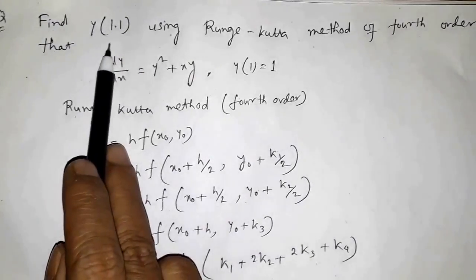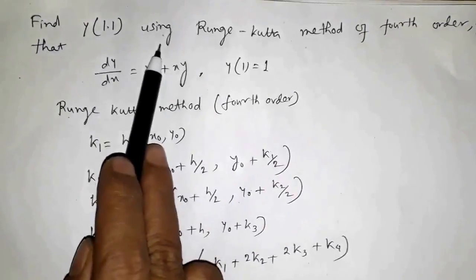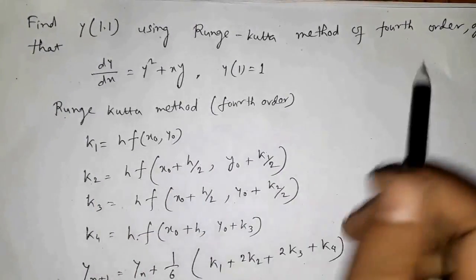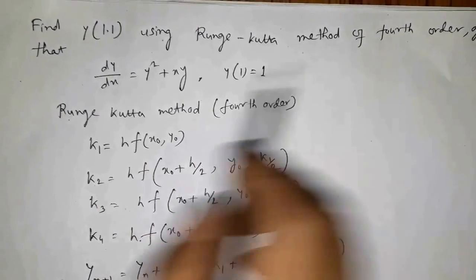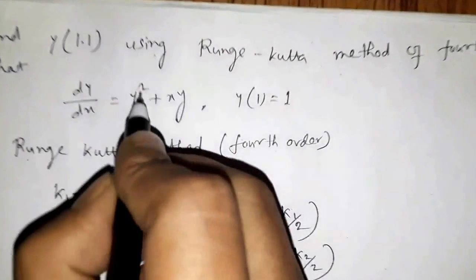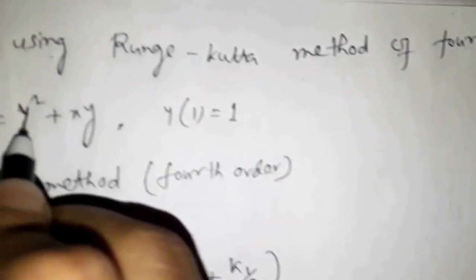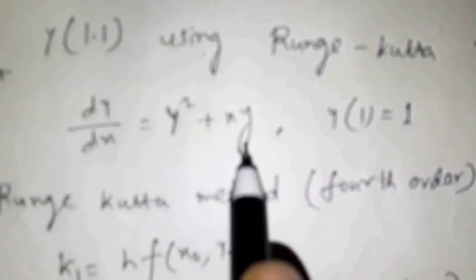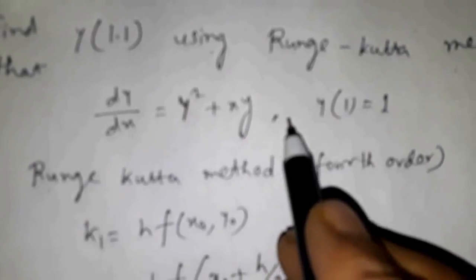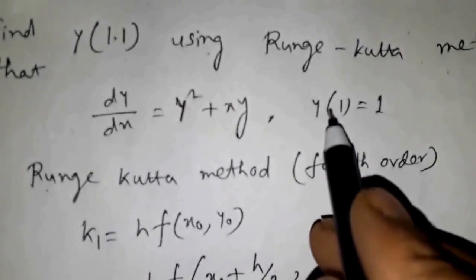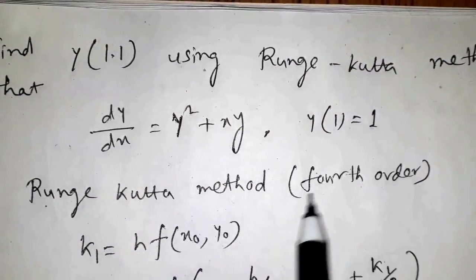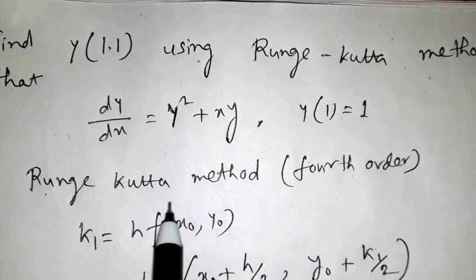Find the value of y(1.1) using the Runge-Kutta method of fourth order, given that dy/dx equals y² + xy, with the initial condition y(1) = 1.